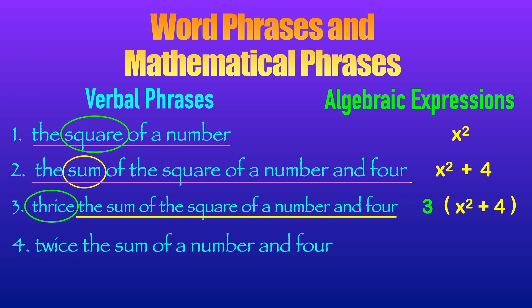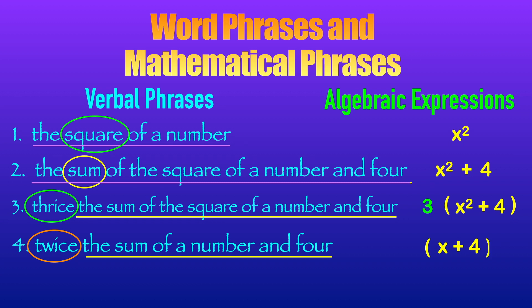Number four: 'twice the sum of a number and four.' The sum of a number and four is addition — let us represent that number as x, so it is x plus four. Then we multiply it by twice, so we add parentheses and place 2 in front. So when you translate 'twice the sum of a number and four' to algebraic expression, it is two times the quantity x plus four, written as 2(x + 4).